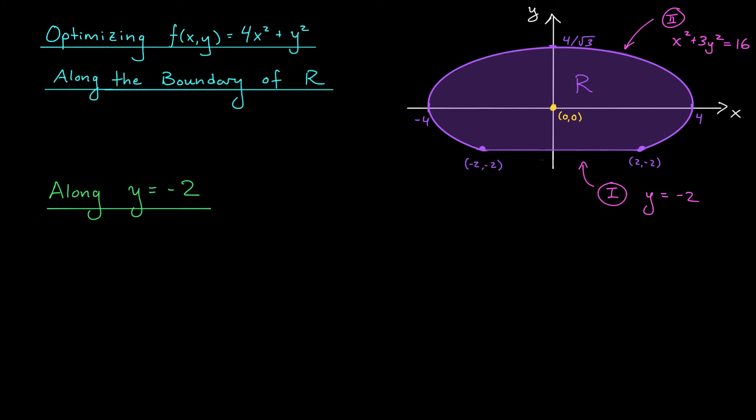How big or how small can our function possibly get when we restrict y to be equal to minus 2? Well, according to our equation, the function along this line segment is given by f(x, -2) equals 4x squared plus (-2) squared, which is 4x squared plus 4. Of course, we aren't really concerned with all x values here. We need to make sure that we're only focusing on points on the line segment. Since the line segment is defined only for x values between minus 2 and 2, this is the domain we're going to consider. This, folks, is the description of our function along this line segment.